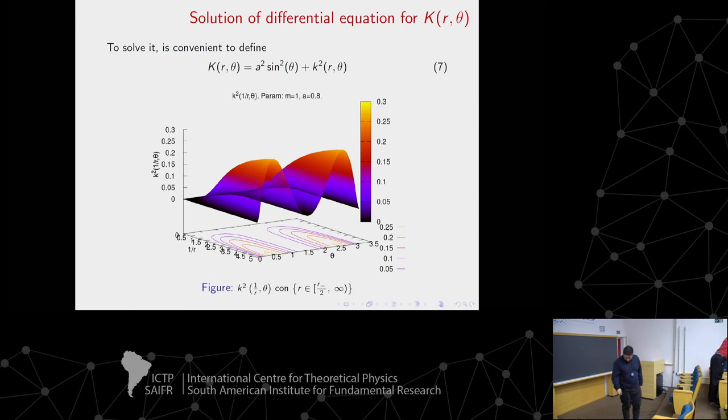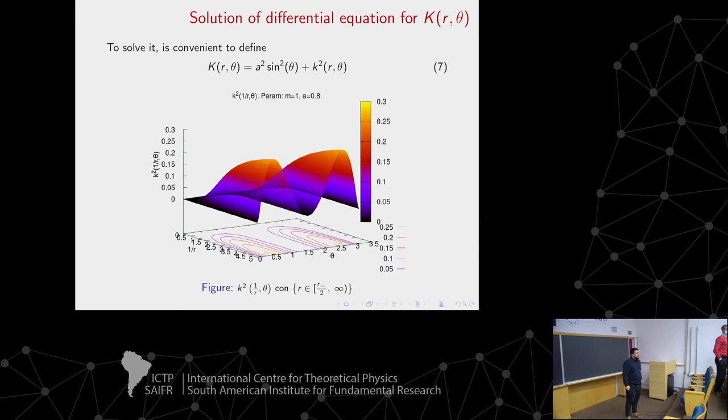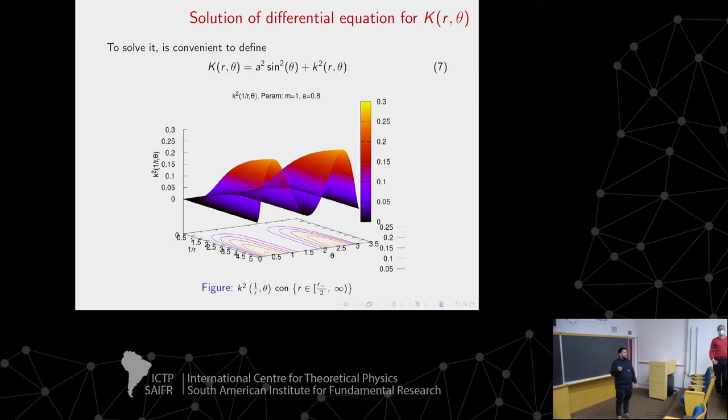Just to clarify - these double null coordinates allow you to do evolution inside the horizon without having to do excision or smoothing the metric in some way, right? Yes, that's right. That is the expected property - for example in the Schwarzschild case, the Kruskal null coordinates allow that. Here we have the extended center-of-mass null coordinates that do the same, but in Kerr.